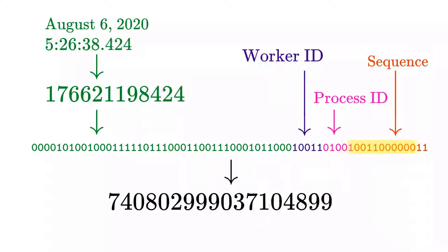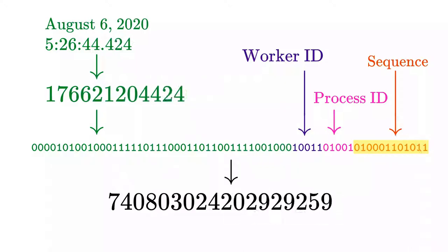Finally, the remaining 12 bits are the sequence number. It's incremented for each ID generated, and loops around every 4,096 IDs.